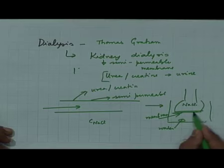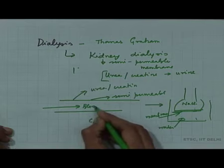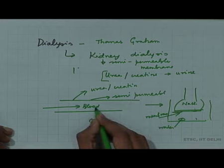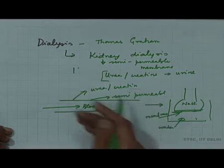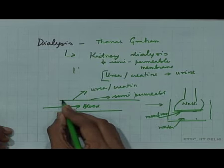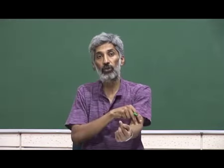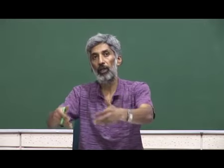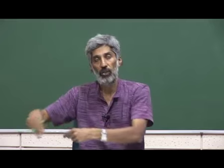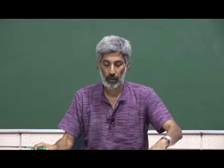When the concentration of NaCl on one side is higher than on the other, the sodium chloride diffuses through the semi-permeable membrane — this is dialysis, similar in principle to reverse osmosis. In kidney dialysis, blood goes through a semi-permeable membrane; the concentration of urea and creatine is higher than in the surrounding medium, so they flow out. You may need to do this every 2 or 3 days until a replacement kidney is found. Dialysis is another thing one encounters when looking at colloids.